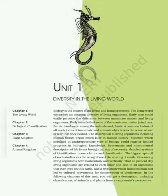Societies which indulged in an anthropocentric view of biology could register limited progress in biological knowledge. Systematic and monumental description of life forms brought in, out of necessity, detailed systems of identification, nomenclature and classification. The biggest spin-off of such studies was the recognition of the sharing of similarities among living organisms both horizontally and vertically. That all present-day living organisms are related to each other and also to all organisms that ever lived on this earth was a revelation which humbled man and led to cultural movements for conservation of biodiversity.